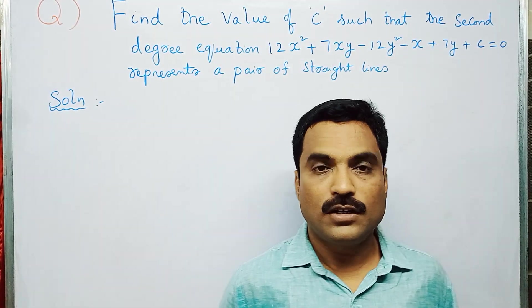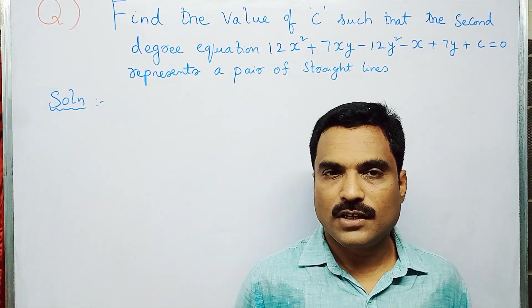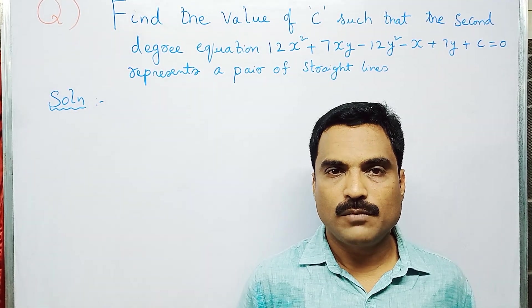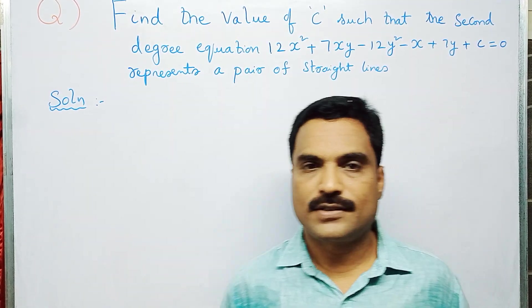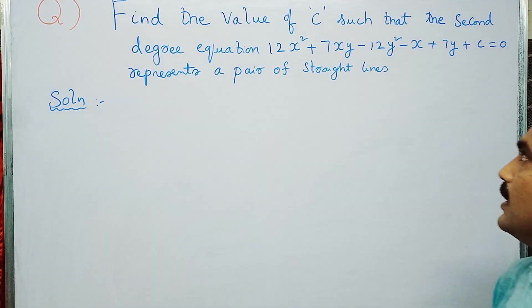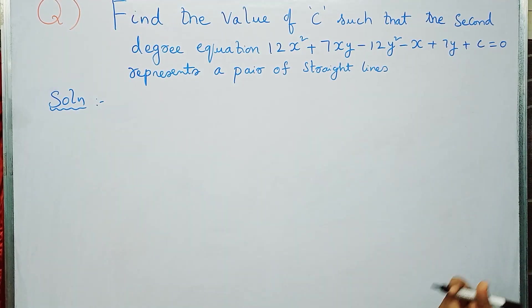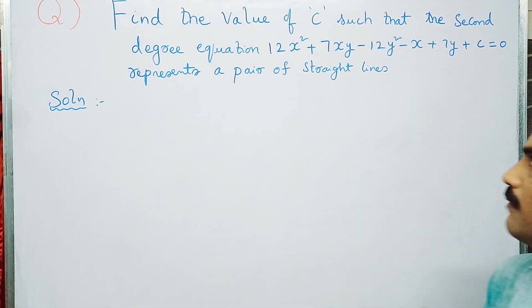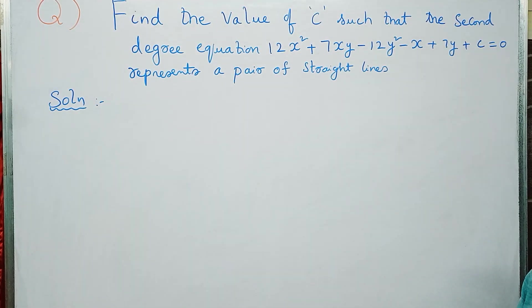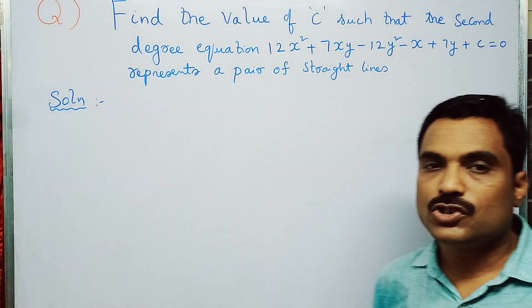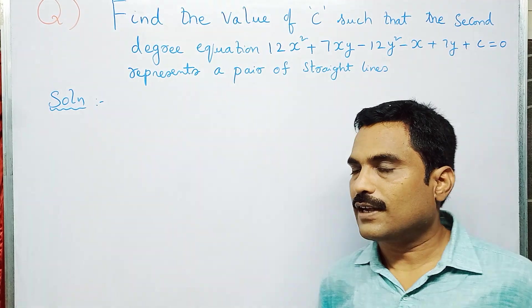Hi, welcome to my channel Yanam Takshasila. In this new video I am going to solve a mathematical problem under the topic conics. The problem is: find the value of C such that the second degree equation 12x² + 7xy - 12y² - x + 7y + C = 0 represents a pair of straight lines.